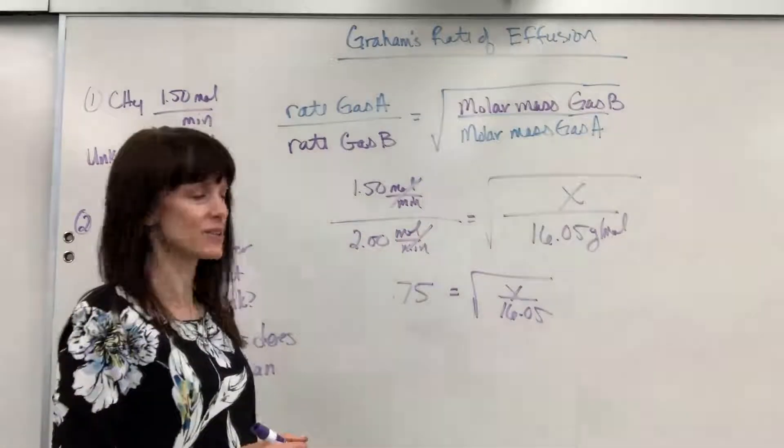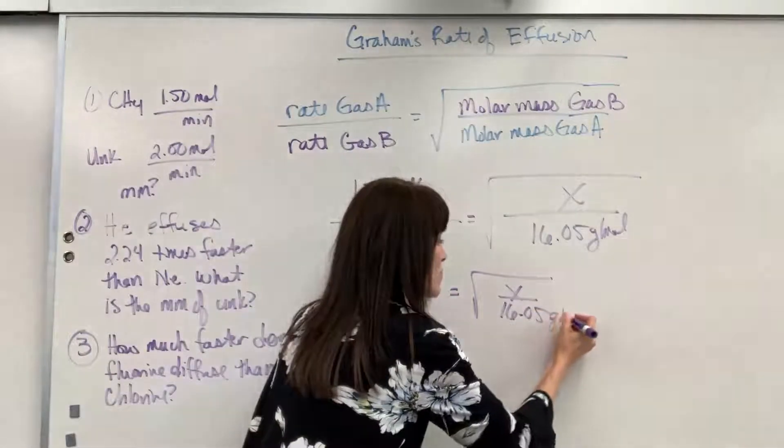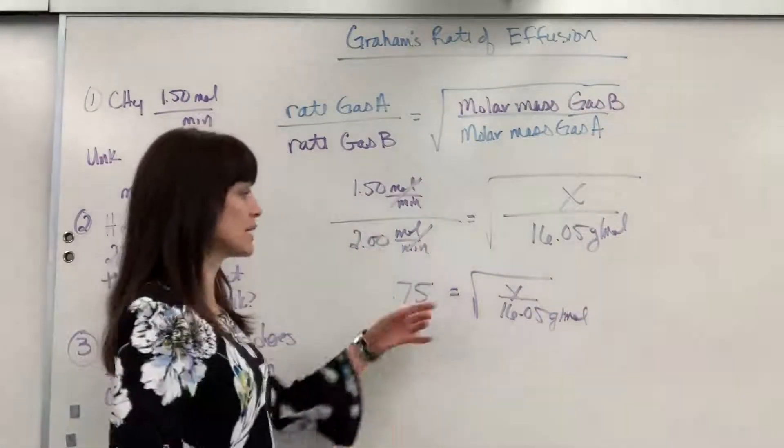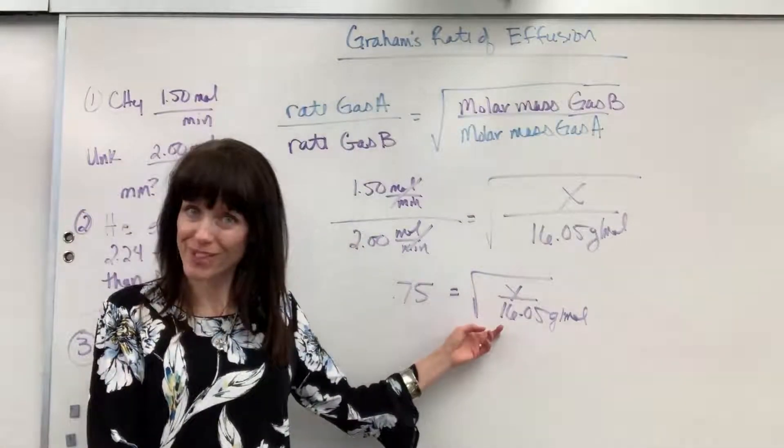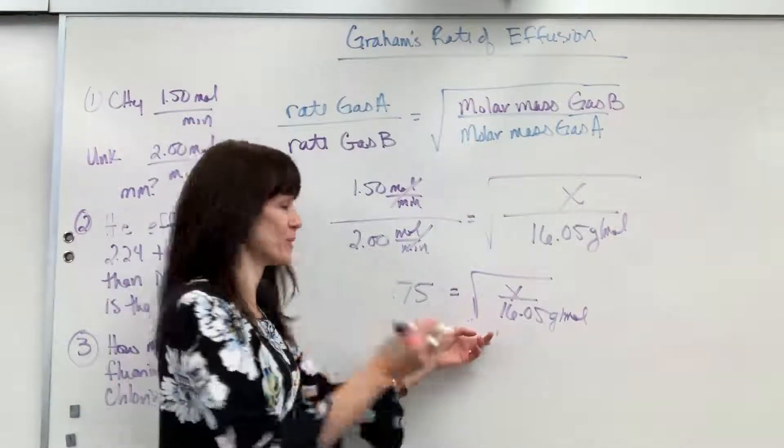Notice those units canceled out. I still have my grams per mole right there. Now, to get rid of a square root, what do we do? Square both sides. You're going to square both sides.